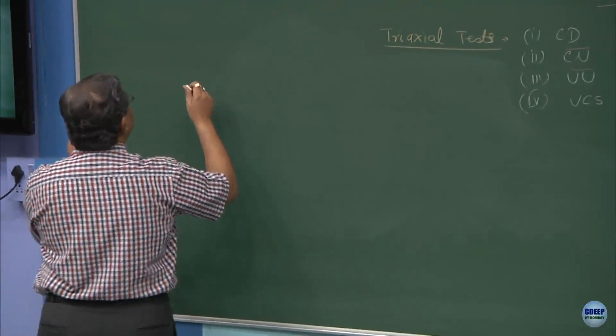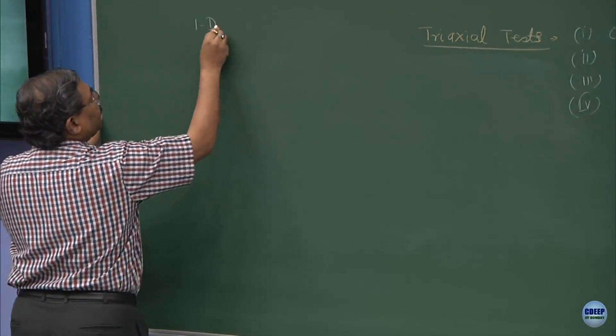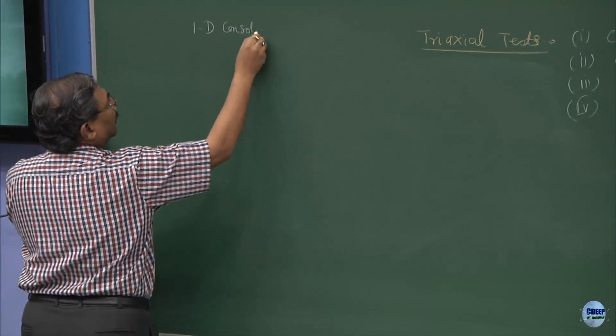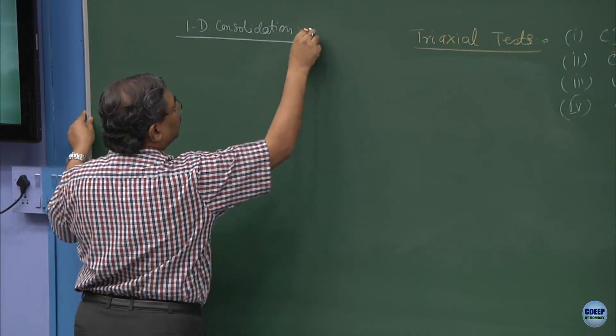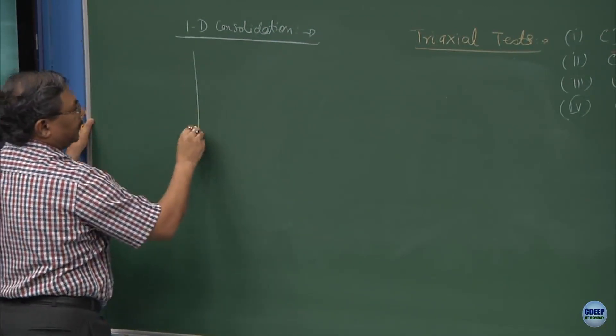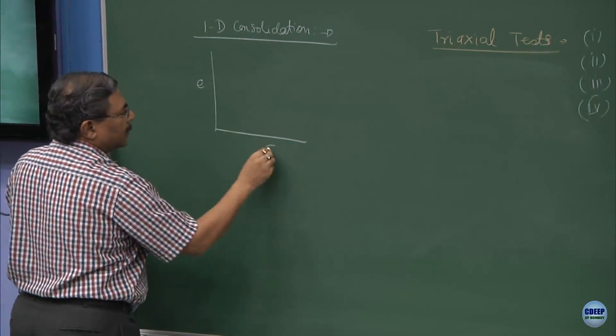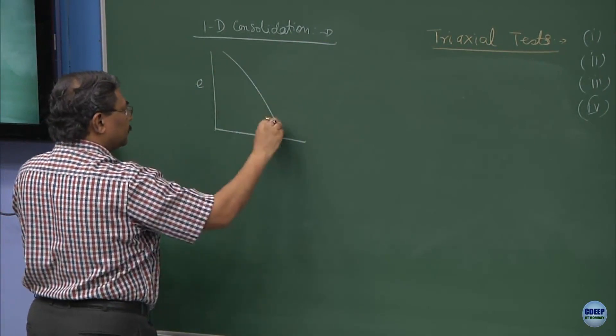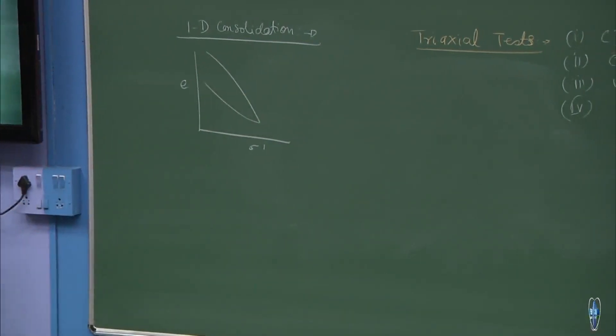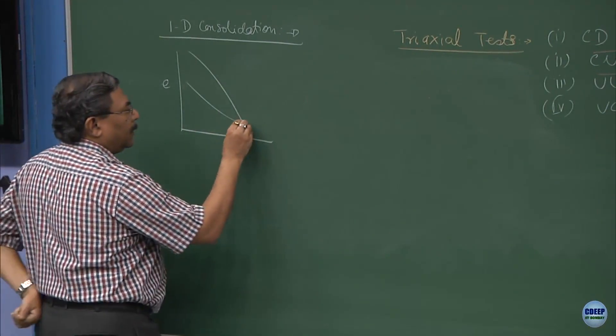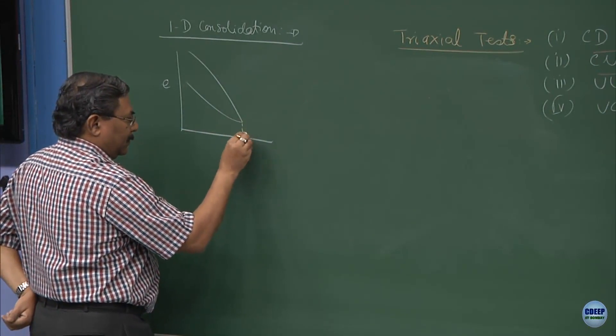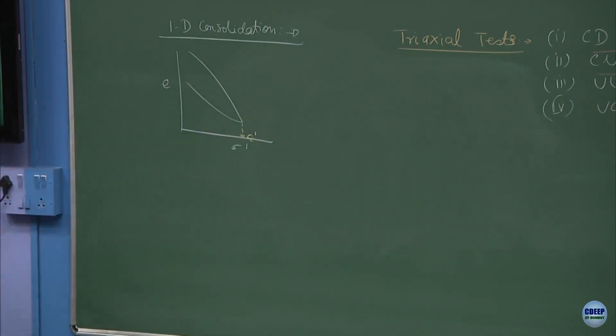We have all studied this one-dimensional consolidation process. A typical relationship is between void ratio and sigma prime. Do you remember this? We define this tip as pre-consolidation pressure.